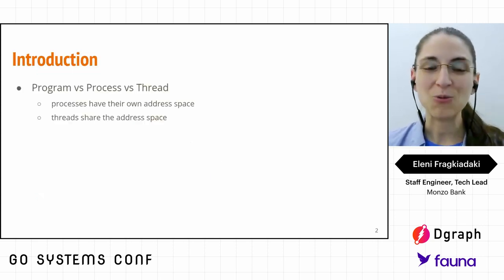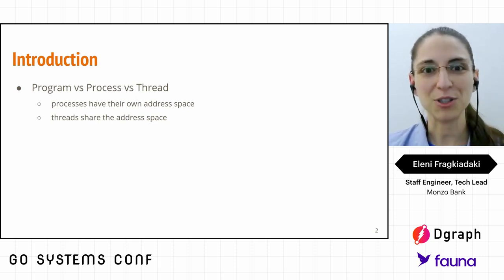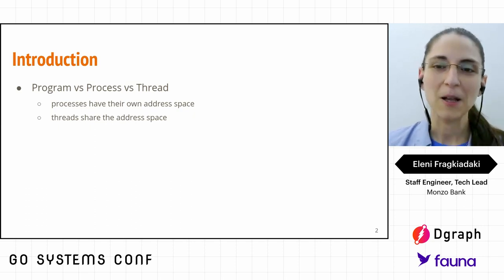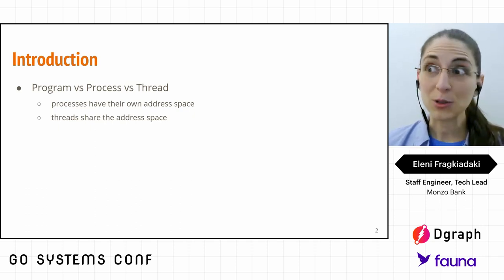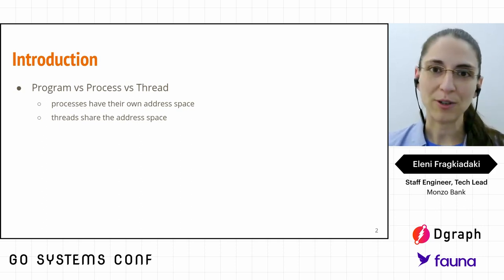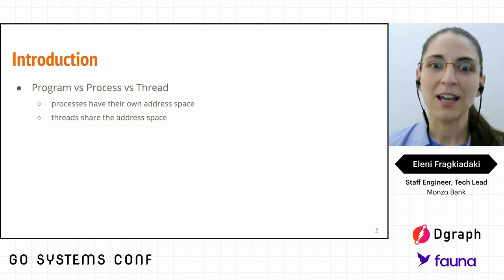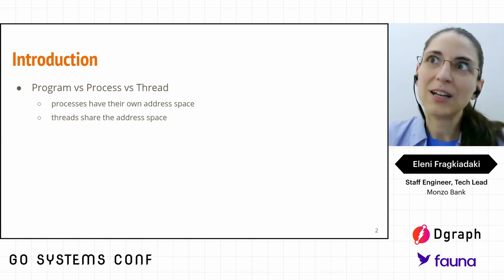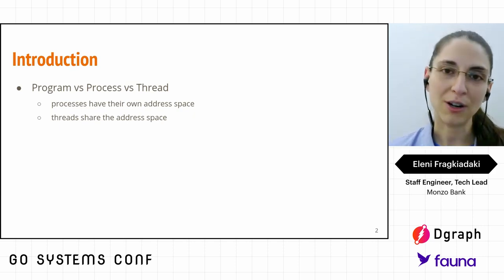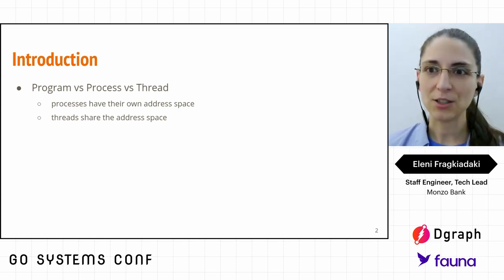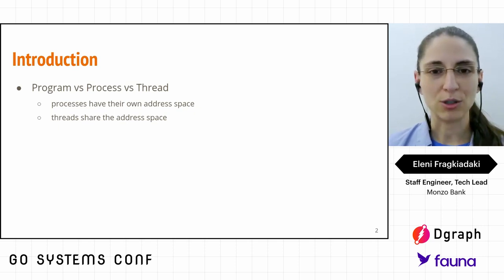Before we begin, one concept that is really useful to clarify is the difference between what a program is versus what a process is versus what a thread is. A program is the lines of code that we write, usually on our IDE. We store the file on our laptop or computer, but it only actually becomes a process when it is executed on our laptop or server. A process is tied with the operating system and it has its own memory space, which we use to store variables, manage communication, and many other things.